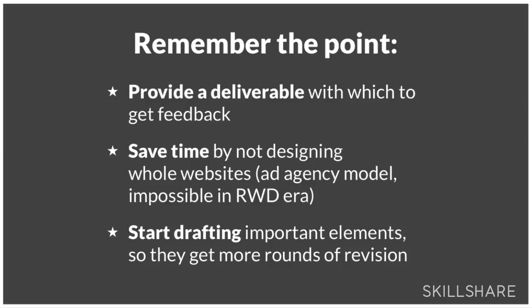Remember the point of these — why are we doing them? You're trying to get feedback. These are all different designers making up different types of deliverables that serve the particular project and allow them to get the feedback they need at that point in time. A style tile is appropriate if you just want to know if they like your colors. A Frankenstein layout is more appropriate if you really want to get design feedback without having to design a whole website. If you work at an ad agency, you might do three separate website designs and two of them will get thrown away. But smaller scale clients and designers don't have time for that. These are all attempts to get the feedback you need without doing so much wasted work. It's also good because you start drafting these really important elements, so they'll end up with six, eight, or ten rounds of revision versus just the standard one mock-up and two rounds of revisions that a lot of design contracts are used to.